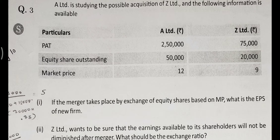You have to calculate EPS because it will help in solving the question. EPS of A Limited: 250,000 divided by 50,000 — that is 5. So EPS of A Limited is 5. For Z Limited, we calculate 75,000 divided by 20,000 — so 3.75. EPS of Z Limited is 3.75.